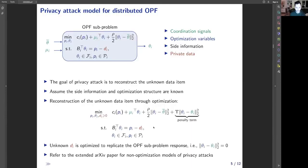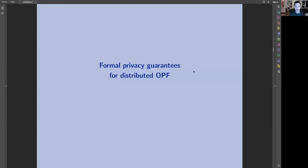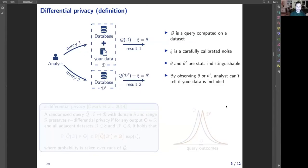We refer to the extended version of this paper available on arXiv for other non-optimization models of privacy attacks. Since the load value is shown to be leaked through coordination signals, our goal in this work is to provide formal privacy guarantees for distributed OPF computations. To provide these guarantees, we use the notion of differential privacy originated in analysis of large databases.